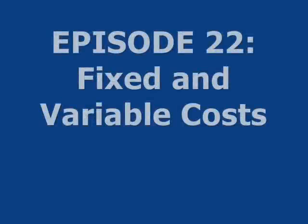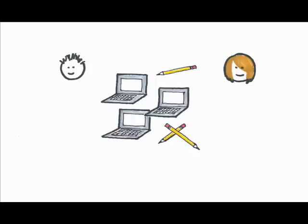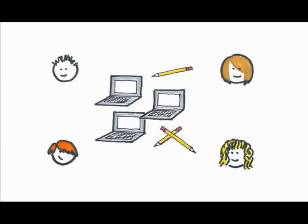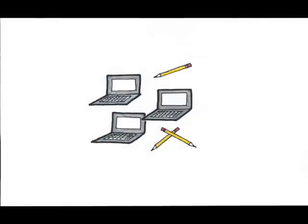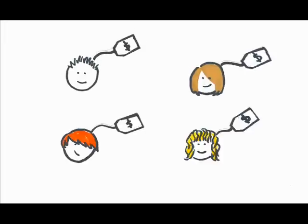Remember my productivity experiment? The one where I kept adding more workers, my variable resource, but kept all other resources fixed? Well, if some of my resources are fixed, then there's a component of my cost that's fixed. And if I have resources that are variable, then I'll have some costs that are variable.